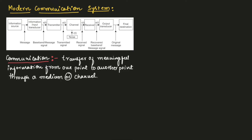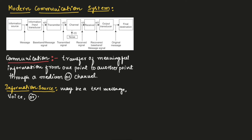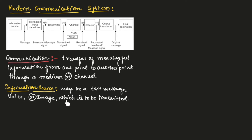Now let us see what is an information source. The information may be a text message, voice message, or an image which is to be transmitted.